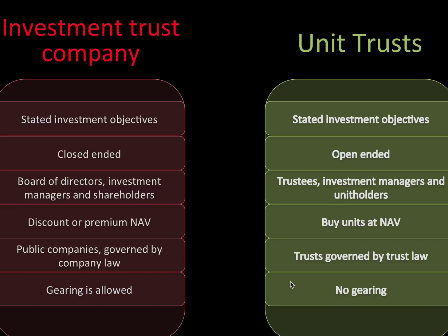A unit trust also has stated investment objectives. It's open-ended, which means more money can come in or be withdrawn — units can be created and destroyed. You have trustees, investment managers, and unit holders. You buy units at the net asset value, and it's governed by trust law. The big thing is that no gearing is allowed.